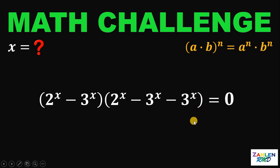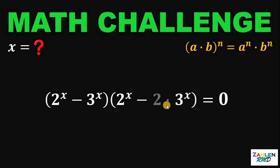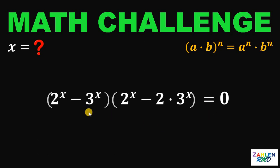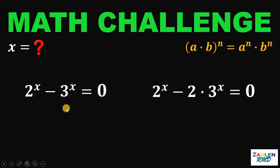Now let's combine like terms. Negative 3 raised to x minus 3 raised to x is just negative 2 times 3 raised to x. Since it is equal to 0, at least one of the factors must equal 0. Therefore, we can say that 2 raised to x minus 3 raised to x equals 0, or 2 raised to x minus 2 times 3 raised to x equals 0.